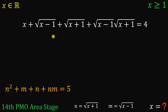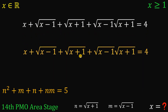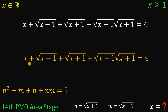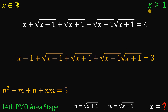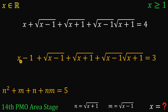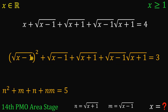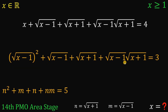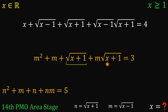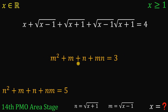Setting that result aside, we go back to the original equation and instead subtract 1 from both sides, giving 4 minus 1 equals 3 on the right. Since x minus 1 is a positive real number, we rewrite it as square root of x minus 1 squared. Replacing all terms using m equals square root of x minus 1 and n equals square root of x plus 1, we get m squared plus m plus n plus m times n equals 3.